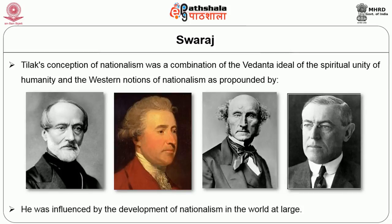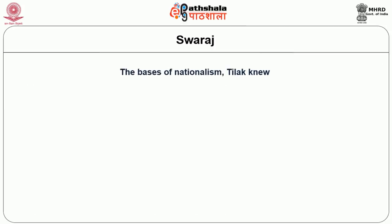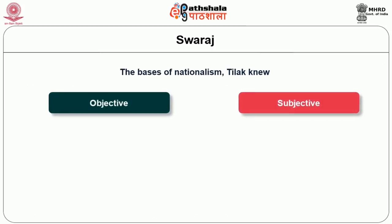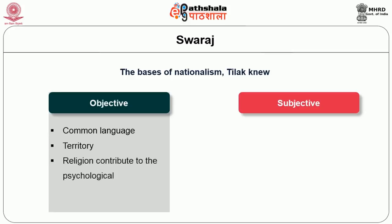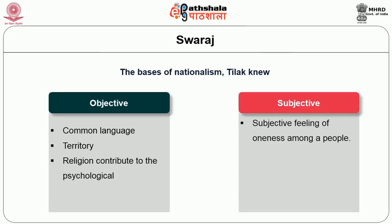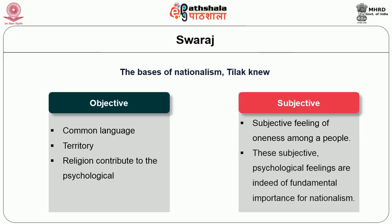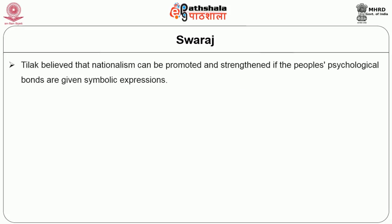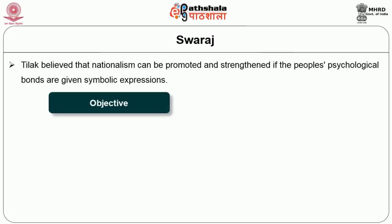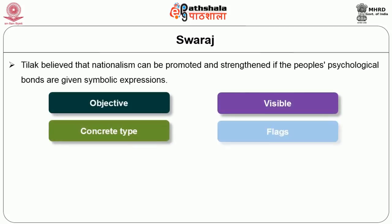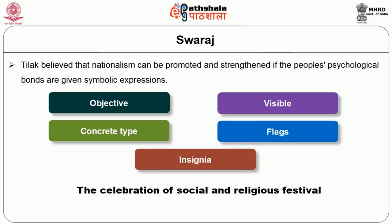He was influenced by the development of nationalism in the world at large. Mill understood the basis of nationalism as being both objective and subjective. Objective factors such as common language, territory, and religion contribute to the psychological or subjective feeling of oneness amongst people. These subjective psychological feelings are indeed of fundamental importance to nationalism. Tilak believed that nationalism can be promoted and strengthened if people's psychological bonds are given symbolic expressions of an objective, visible or concrete type, namely flags, insignia, and celebration of social and religious festivals.